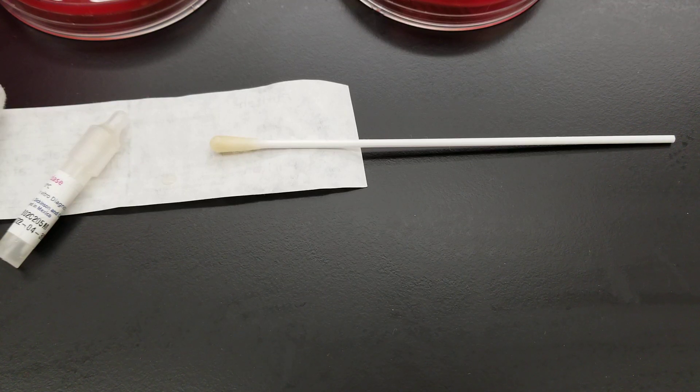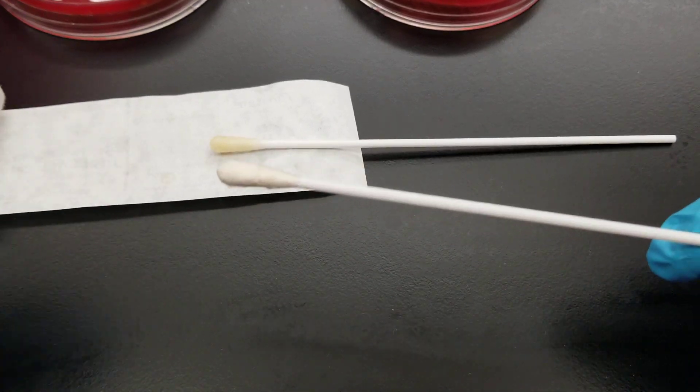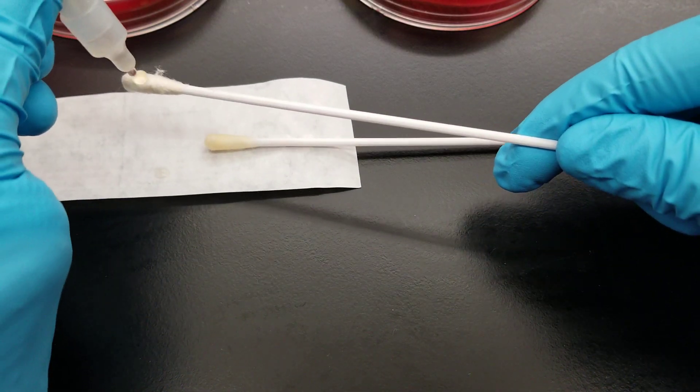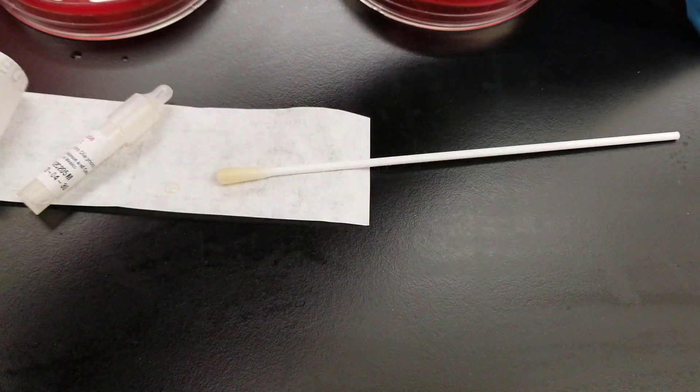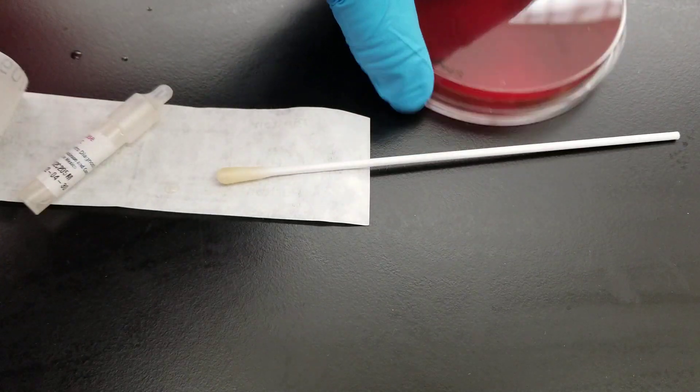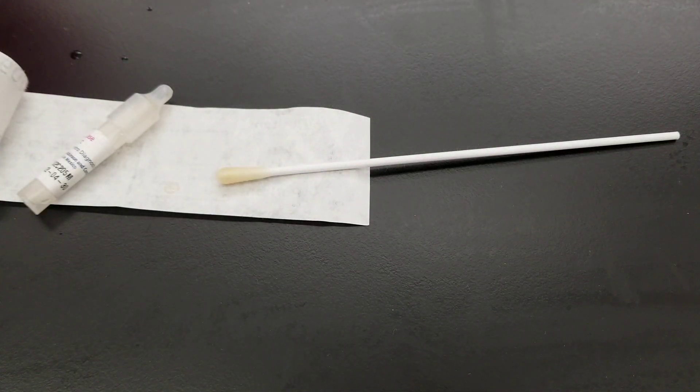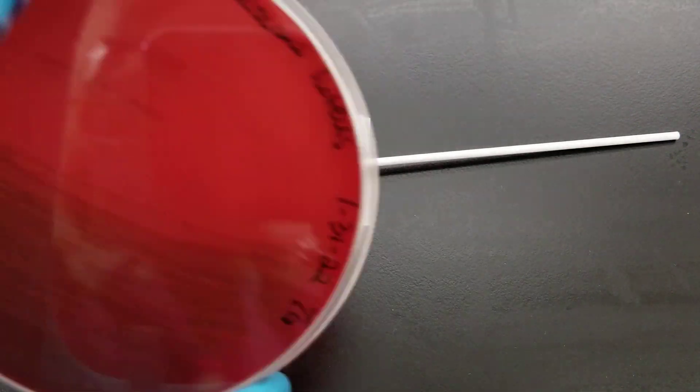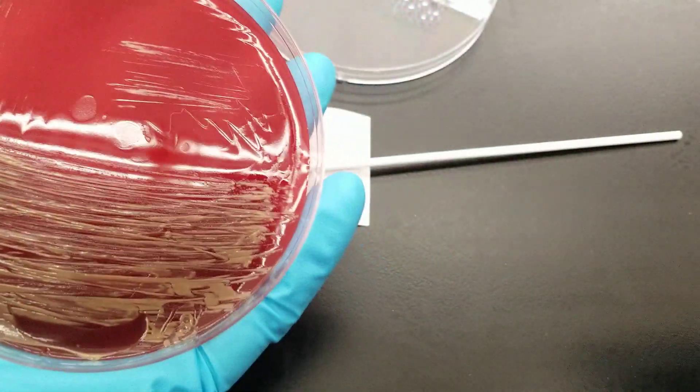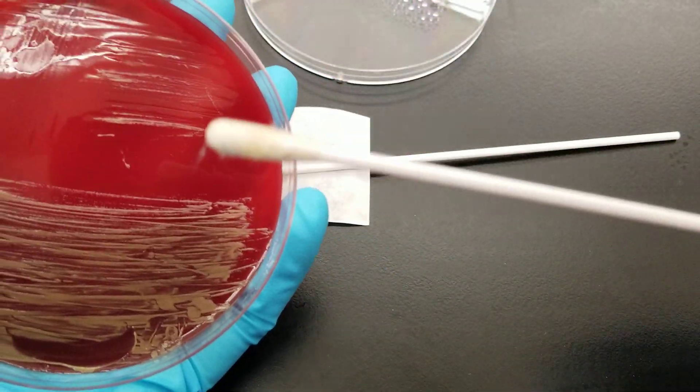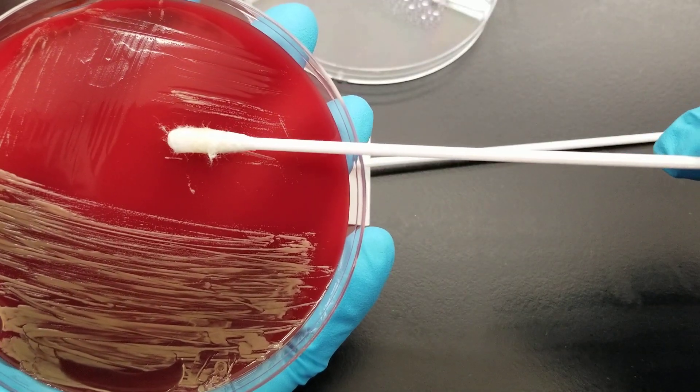Let's do micrococcus luteus so you can see that too. I'm pulling out another set of swabs. We're going to do this one. Saturate the swab. Get the correct bacteria. We already did staphylococcus, now micrococcus luteus. So that's the guy we're going to use. Still going to go out to the saturated part, out towards the end.